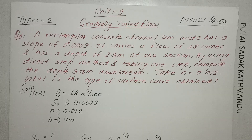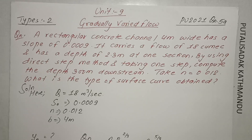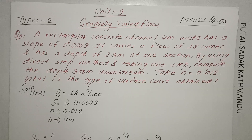A rectangular concrete channel having width B equal to 4 meters and a given bed slope carries a discharge of 18 cubic meters per second with a depth at one section of 2.3 meters. By using the direct step method and taking one step, compute the depth 300 meters downstream.